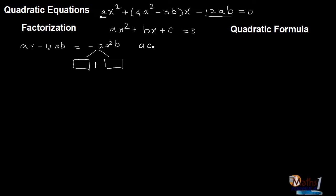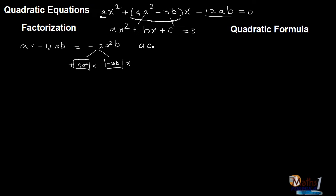And if I add or subtract — this is where the splitting of the midterm comes into picture. When I add or subtract, I need to get that particular midterm. So looking at the midterm itself, I can see 4a² and minus 3b — they look like the right values. So if that is the case, it should be 4a² and 3b. If I keep this minus and keep this plus, it will be plus 4a²x minus 3bx, and if I take x common, I will get the midterm.